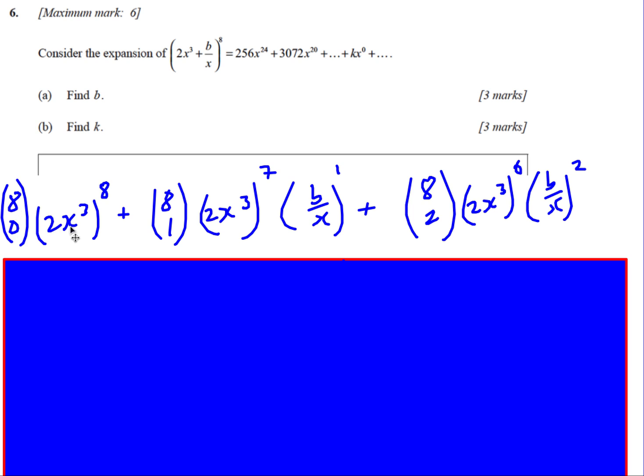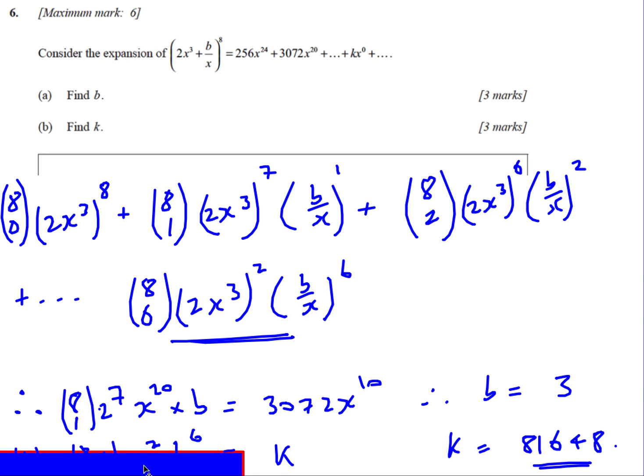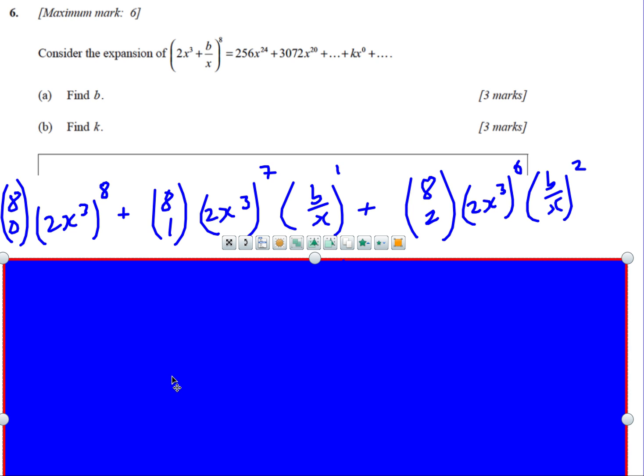My expansion would be 8 to 0, 2x cubed to the power 8. 8 to 1, 2x cubed to the 7, b over x 1, et cetera, et cetera. And then once I've got this, I've got enough information now to solve it. All right, let's actually expand out what we've got.